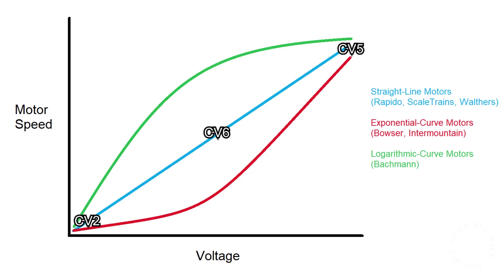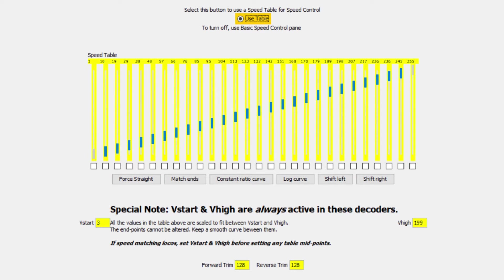For the motors that don't respond in a straight line, we will use the speed table method, which is slightly more complex than the simple method. Instead of using three points to define the performance of the motor, a speed table will define the performance of the motor using 28 points. This way, the motor can be fine tuned at different areas of the speed curve in order to compensate for the erratic changes in speed.